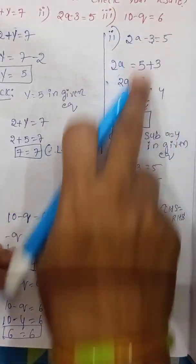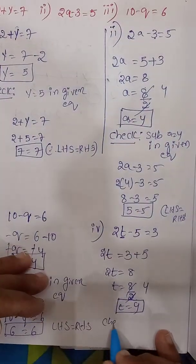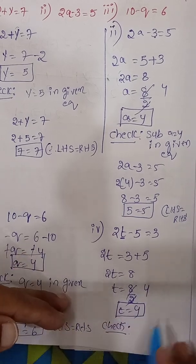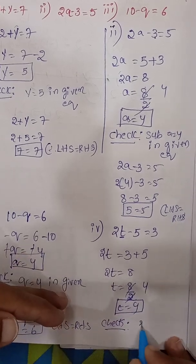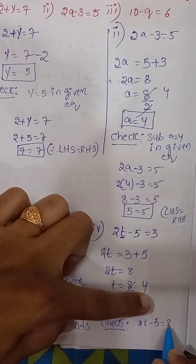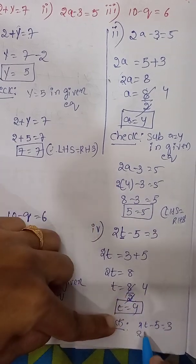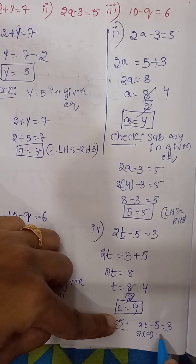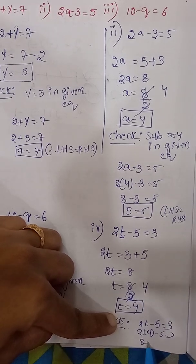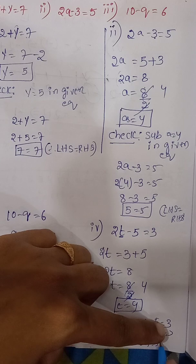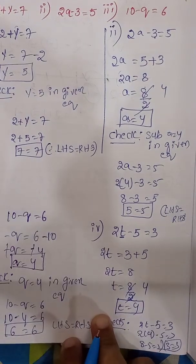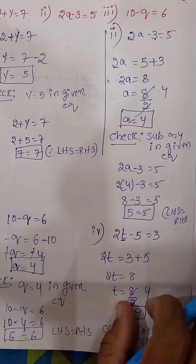Check: substitute T equal to 4 in the given equation 2T minus 5 equal to 3. We get 2 into 4 minus 5, which is 8 minus 5 equal to 3. LHS equals RHS, so our answer is correct.